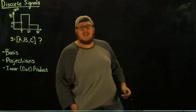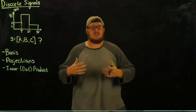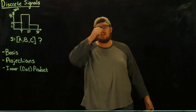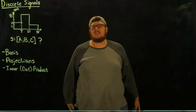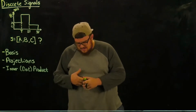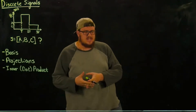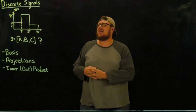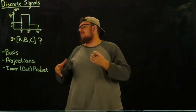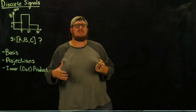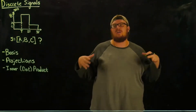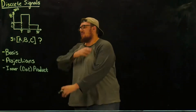Hey guys, this is Andrew with HKN, and today we're going to be talking about one of the first steps in the background information on the optimal receiver, and that is discrete signals. We want to be able to represent our continuous time signals as symbols, and specifically it would be nice if we can express these symbols as a finite set of numbers that we can work with, called an alphabet.